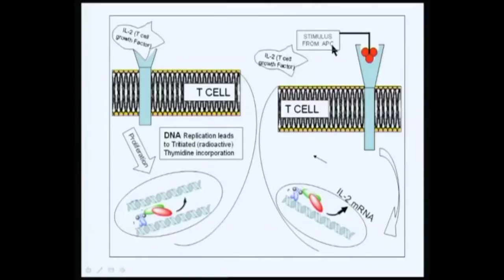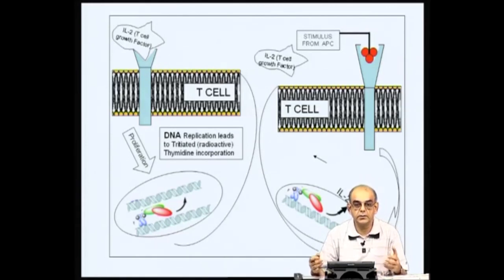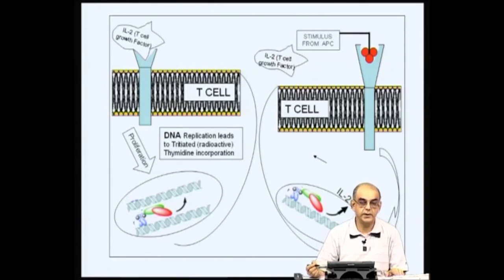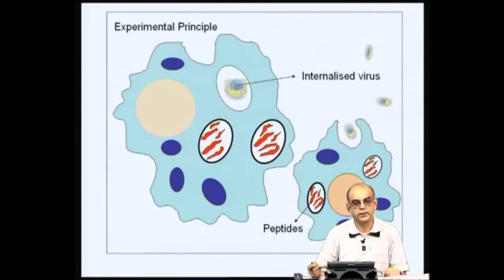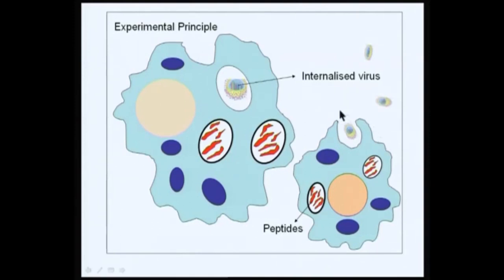Coming to the T cell stimulus — our aim was to see what experiments could demonstrate the function of these adherent cells. In the last lecture, we concluded that adherent cells, when mixed with non-adherent cells containing B and T cells, could lead to better production of antibodies and a better immune response. It was already known that macrophages could phagocytose, thanks to the experiments of Eli Mechnikoff and later experimenters. Cells like neutrophils can also mediate phagocytosis.